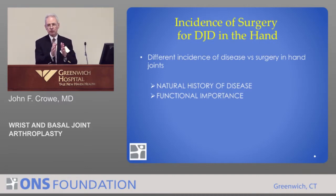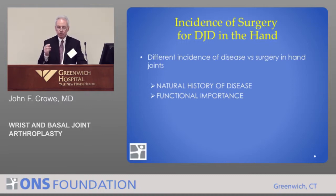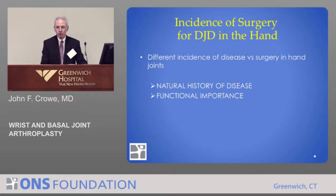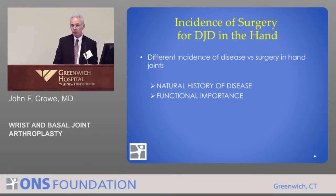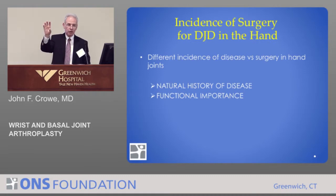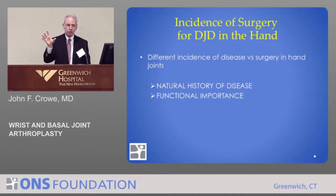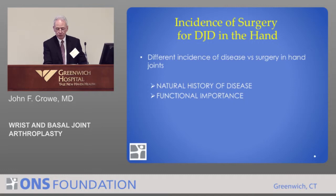So why is that? The difference in incidence of arthritis versus surgery is based on two things: number one, the natural history of the disease. In the distal joint, you frequently see people with a deformed distal joint that is quite symptomatic initially, but with anti-inflammatories and so forth, most of the time the pain will resolve. Also, the functional importance — the basal joint of the thumb is critically important to gripping and positioning your hand, and there are tremendous forces across that joint with something as simple as picking up a carton of milk.